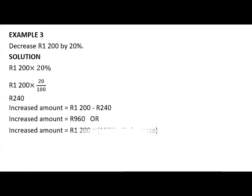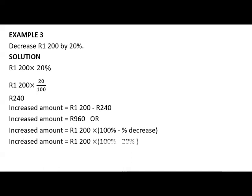Or you use this method here. Because we are decreasing, look at the percentage increase. It's now minus the percentage decrease. So you will simply take the R1,200, which is the value that we are decreasing. You are multiplied by 100% minus the percentage decrease. How much is the percentage decrease? The percentage decrease is 20%. So you will be 100 minus 20%. And 100 minus 20% will be 80%. So R1,200 times 80% will give you R960.